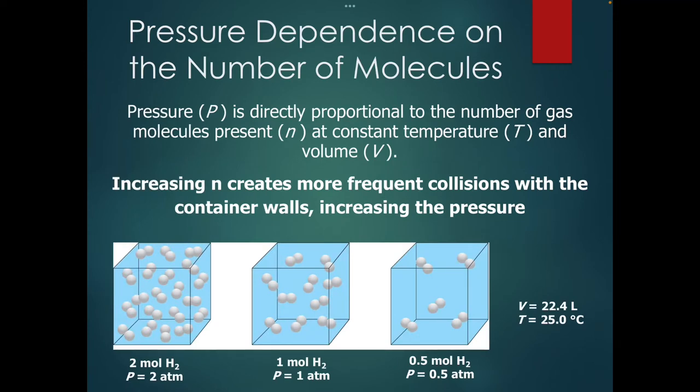Pressure depends on the number of molecules of our gas. If we increase our number of moles, we increase the number of collisions simply because there's more stuff in there. Think about it like a classroom with 30 people walking around versus a hundred people — more people equals more collisions. The same thing applies to our gas molecules: if we have more gas molecules, we're going to have more collisions, both with other gas molecules and with the sides of the container. More collisions, more pressure.